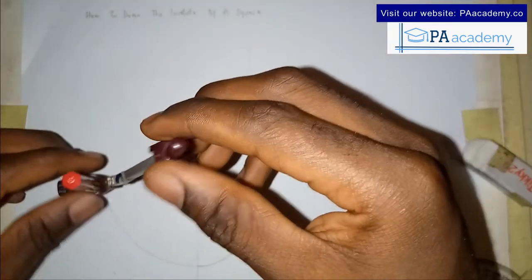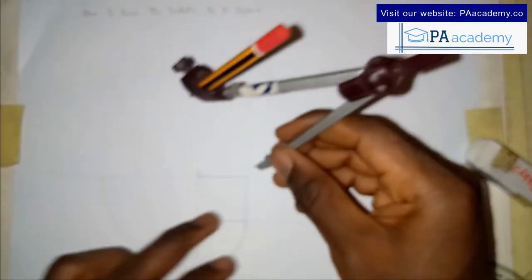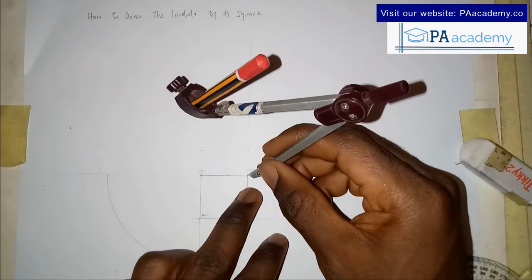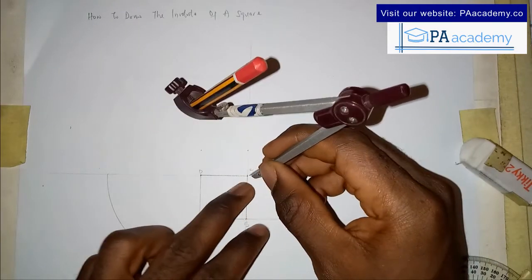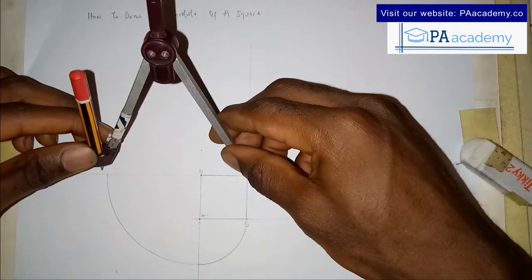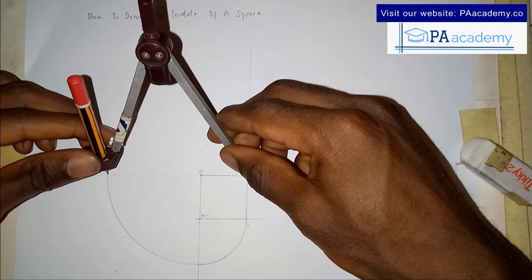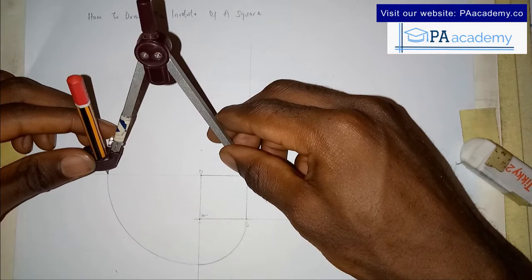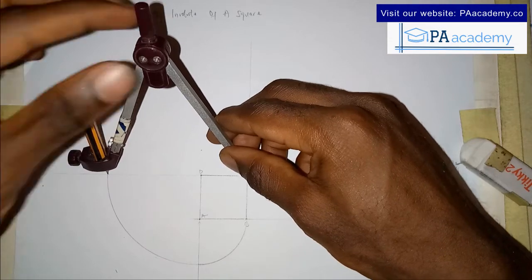The next thing is we are going to come to point C. From point C we are going to adjust the compass to this point — you can also measure it to be nine centimeters.